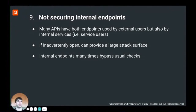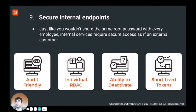Number nine is not securing internal endpoints. Applications often have user impersonation, admin endpoints, or endpoints used by support and customer success teams. If these are left open or exposed to the public, a hacker can easily impersonate any user. We recommend treating every internal endpoint as if it's exposed to the public. That means having monitoring and auditing in place, leveraging individual RBAC — just like you wouldn't share a root password with every employee on a Linux server — and having the ability to deactivate accounts as needed. Also use short-lived tokens rather than tokens that live forever.